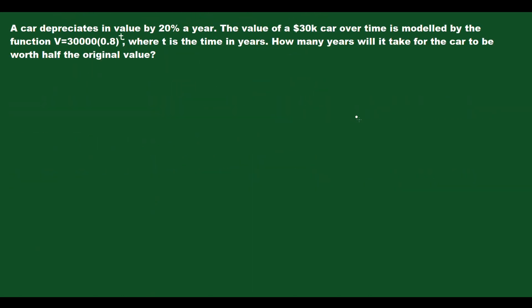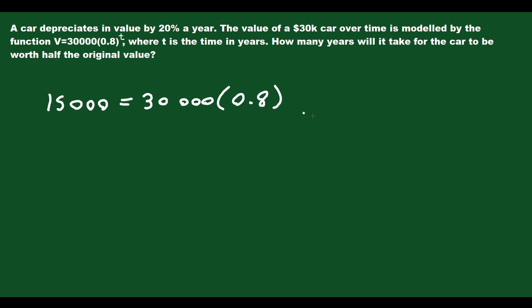A car depreciates in value by 20% a year. The value of a $30,000 car is modeled by v equals 30,000 times 0.8 to the t, where t is time in years. How many years will it take for the car to be worth half the original value — $15,000? So 15,000 equals 30,000 times 0.8 to the t.